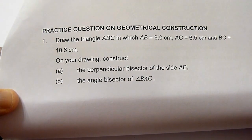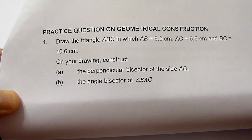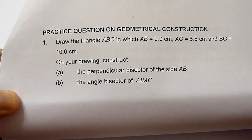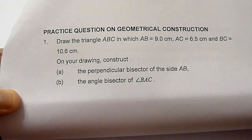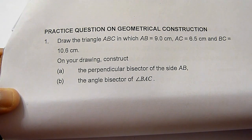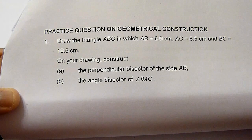In this question, we are going to draw a triangle ABC such that AB is 9 cm, AC equals 6.5 cm, and BC equals 10.6 cm. We shall construct a perpendicular bisector and an angle bisector when we complete this triangle.